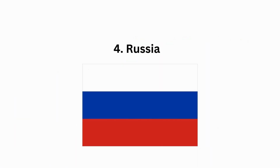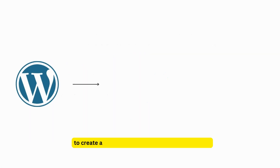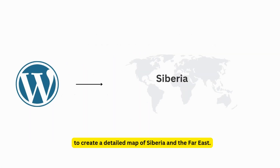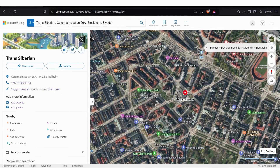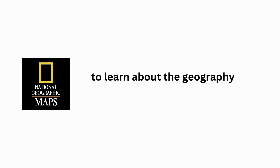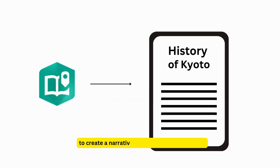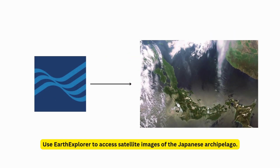For Russia, use OpenStreetMap to add and edit information about cities and towns. Use Natural Earth Data to create a detailed map of Siberia and the Russian Far East. Use Bing Maps to explore satellite imagery of the Trans-Siberian Railway. For Japan, use National Geographic Maps to learn about the geography and topography. Use Esri Story Maps to create a narrative about the history of Kyoto. Use Earth Explorer to access satellite images of the Japanese archipelago.